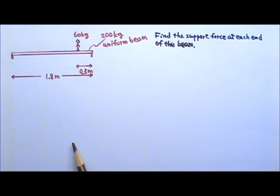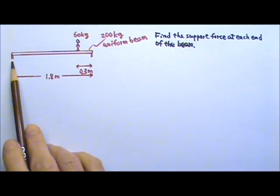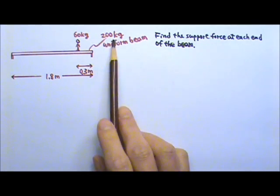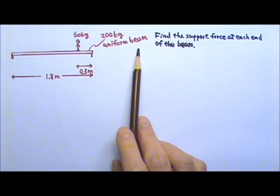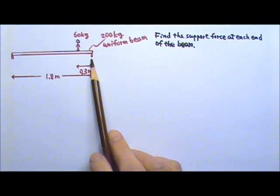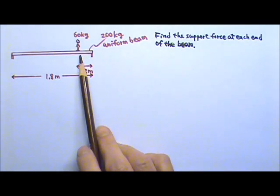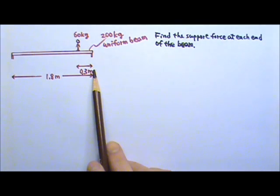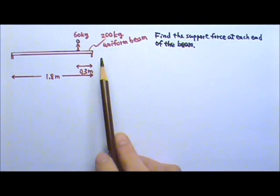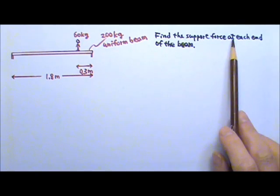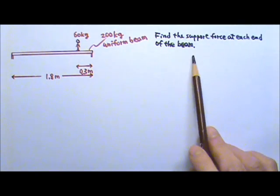Let's start with this problem. There is a 1.8 m long, 200 kg uniform beam. The beam rests on two supports, one on each end. A 60 kg person stands on the beam 0.3 m away from the right end of the beam. Find the support force at each end of the beam.